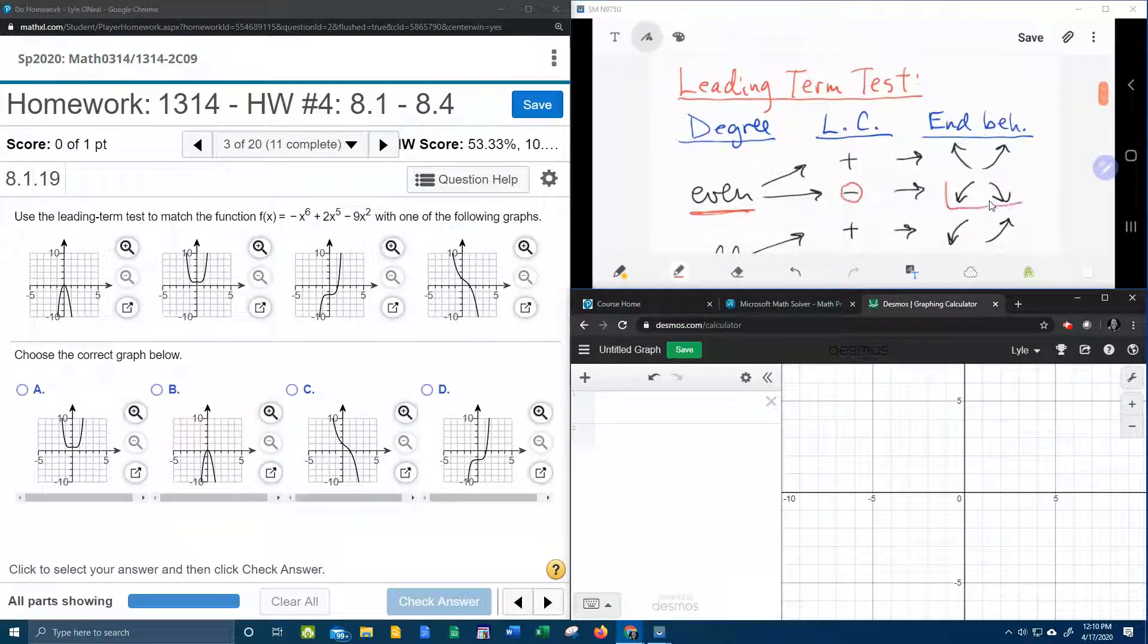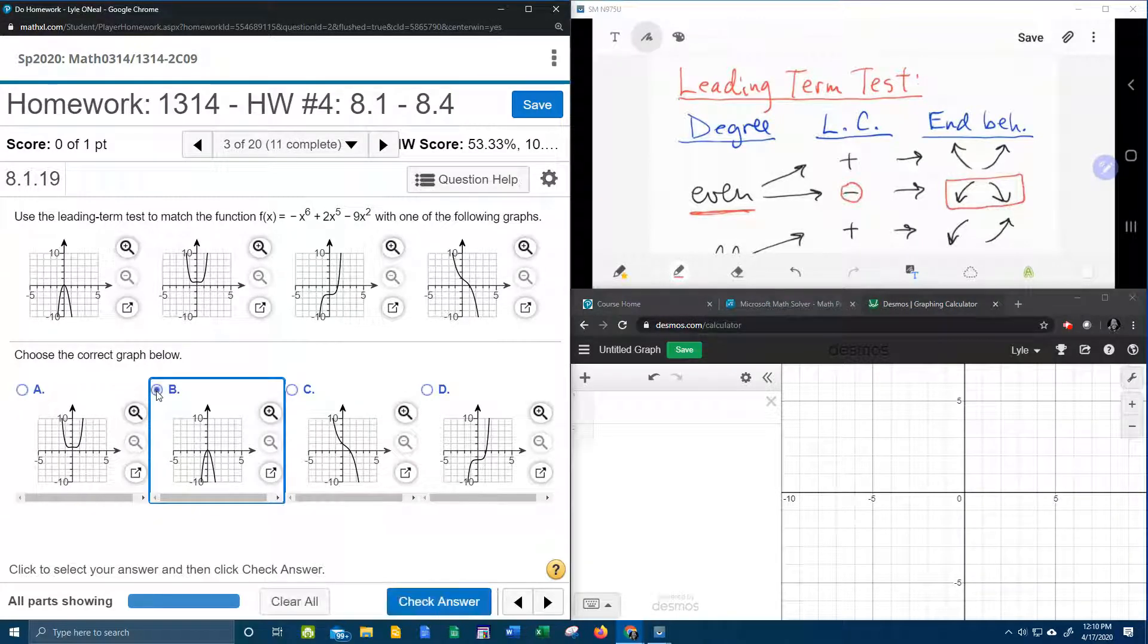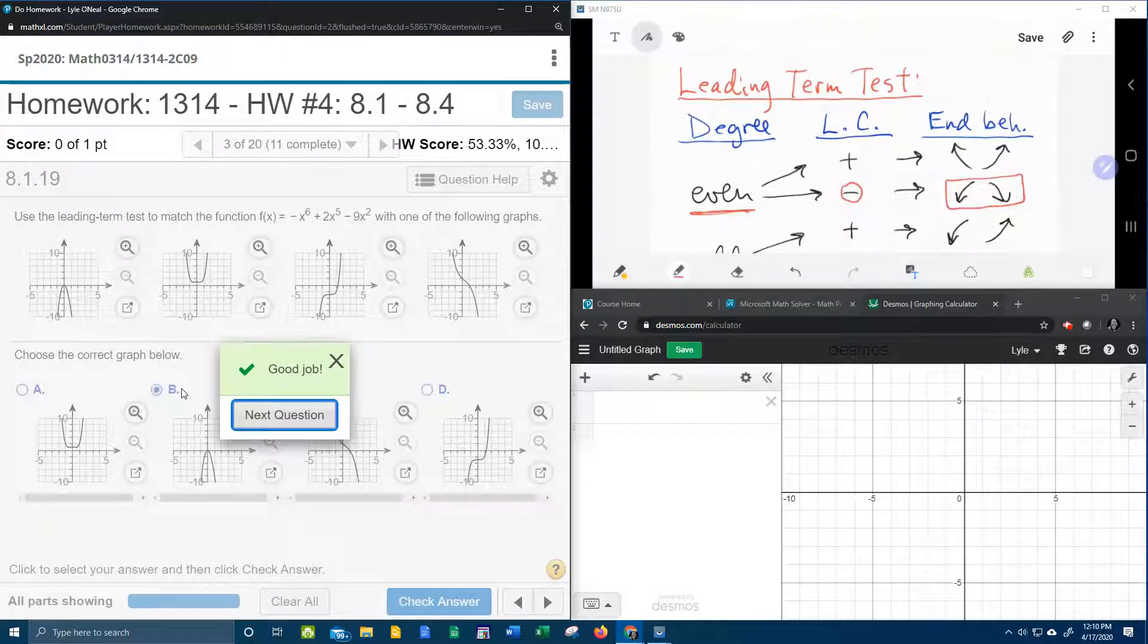And that leads us to this end behavior, which says that our graph has to fall left and right. So the only answer choice that actually falls left and right is b, and that is correct.